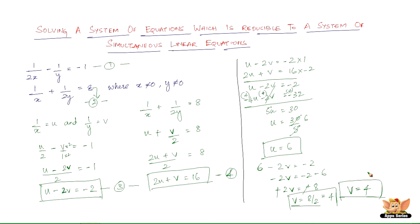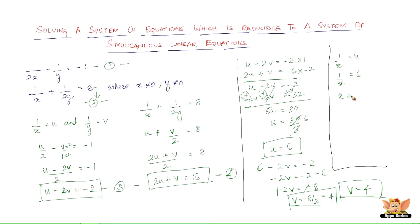We have found u equals 6 and v equals 4. But since the original variables are x and y, we need to back-substitute. Since 1/x equals u, we have 1/x equals 6, so x equals 1/6. Since 1/y equals v, we have 1/y equals 4, so y equals 1/4.